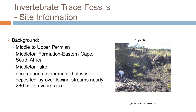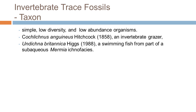The site was found to date from the middle to upper Permian. It was actually a Middleton lake, a non-marine environment that was deposited by the overflowing of streams nearly 260 million years ago. The taxon at the Middleton site are simple, low-diversity and low-abundance organisms. The trace fossils are from Conichnus anguinus, a vertebrate grazer, and Undichna britannica, assumed to be fish, part of a subaqueous myrmia ichthyofossils.